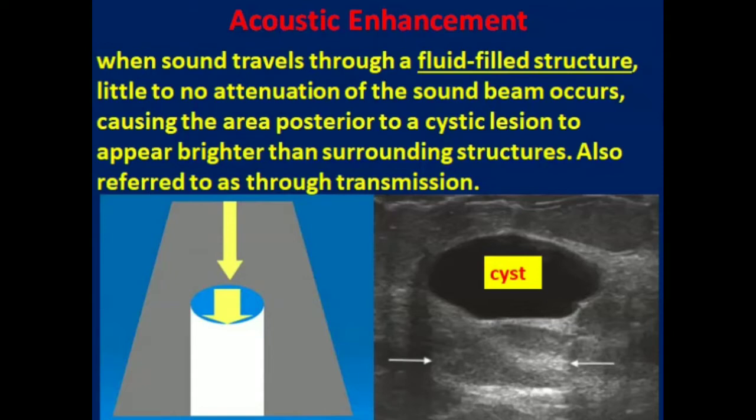When sound travels through a fluid-filled structure, little or no attenuation of the sound beam occurs, causing the area posterior to a cystic lesion to appear brighter than the surrounding structure. This is also named as through transmission.